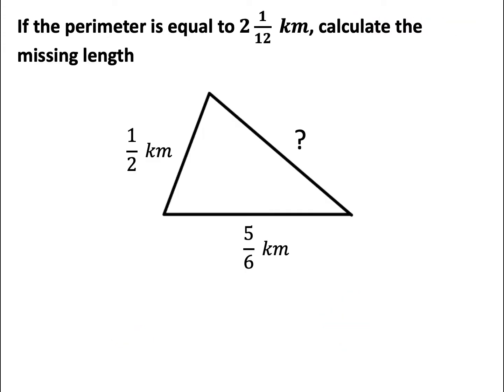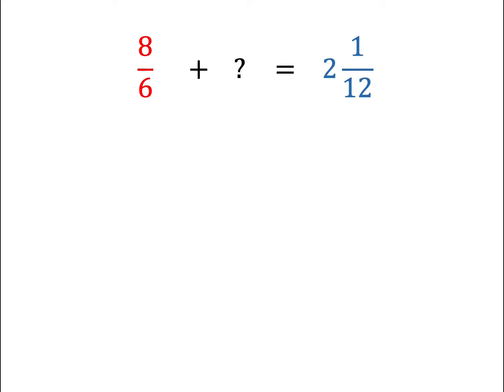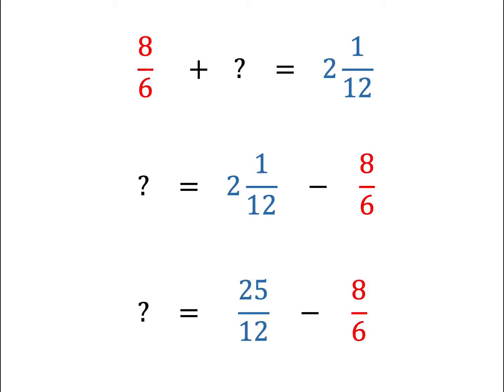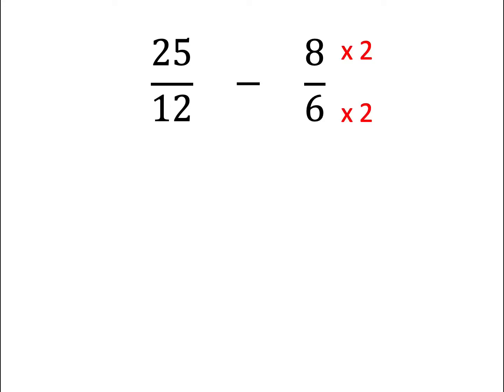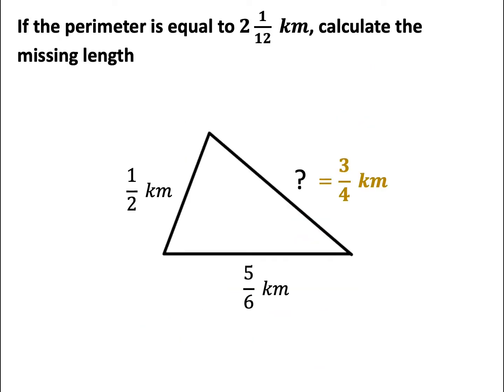Last question. We know that the three lengths on the triangle add up to 2 and 1 out of 12 kilometres. Let's first add the two known fractions together by finding the lowest common multiple, which is 6. Multiplying 2 by 3 gives us 6, and multiplying the numerator by 3 gives us 3 out of 6. Adding these two together gives us 8 out of 6. Now we subtract 8 out of 6 from 2 and 1 out of 12 to find the missing fraction. Converting the mixed fraction into an improper fraction and making the denominators common by multiplying by 2, subtracting the numerators gives 9 out of 12. Simplifying, the final answer is 3 quarters, or 3 out of 4. The missing length is 3 out of 4 kilometres.